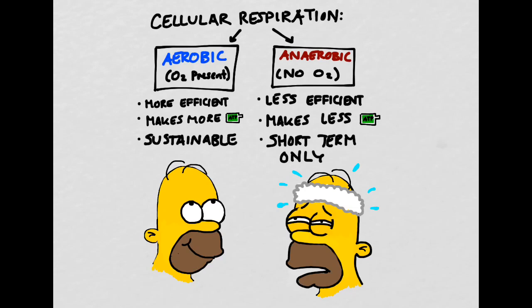There are two main categories of cellular respiration, depending on whether or not oxygen is present. We have aerobic respiration, which is more efficient, makes more ATP, and is also sustainable for a long period of time. And we also have anaerobic respiration, where there is no oxygen present. This process is much less efficient, makes much less ATP, and can only be sustained for short periods of time.